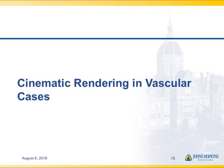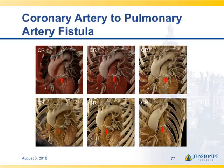In vascular cases, it's no surprise. This was AJR's image of the year last year — coronary artery to pulmonary artery fistula. The cinematic rendering really gives you what looks like a fake image, it has such good detail. You can see the orientation of the coronary artery to pulmonary artery from both the right and left coronary arteries. It's just a very nice display.